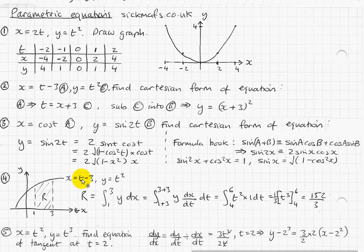And dx by dt is just 1, because if you look at it, x equals t minus 3, so the differential of that is just 1. So that converts to 1, and the dt stays there, because you need to integrate by dt.